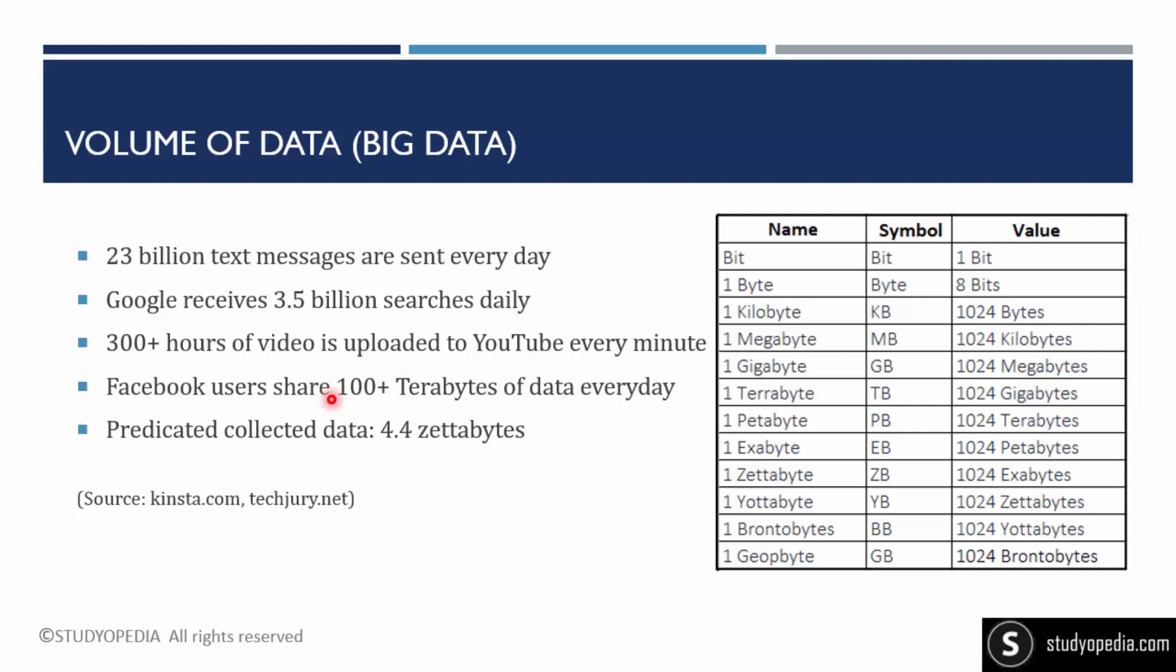This also comes under data. Facebook users share more than 100 plus terabytes of data. Around more than one terabyte of images and videos are uploaded every hour on Facebook. So the predicted data is 4.4 zettabytes. You must be knowing 1024 bytes is 1 KB, 1024 KB is 1 megabyte, and the same goes on. We have reached around here petabyte, zettabytes. This enormous amount of data needs to be stored properly and analyzed so that we can easily generate insights.